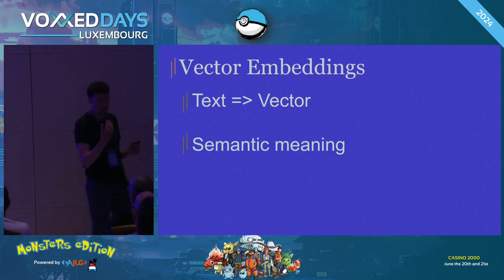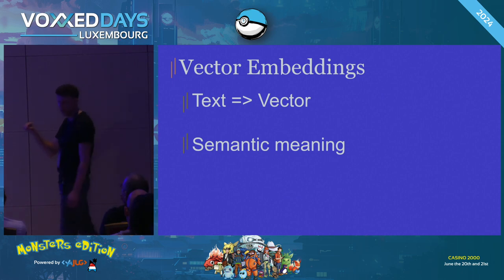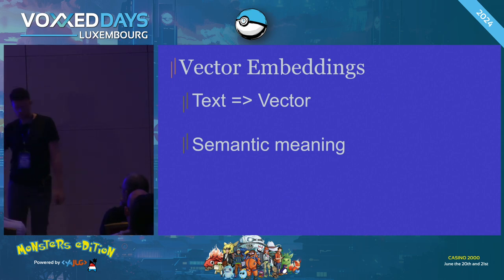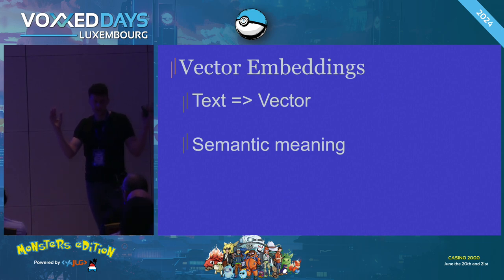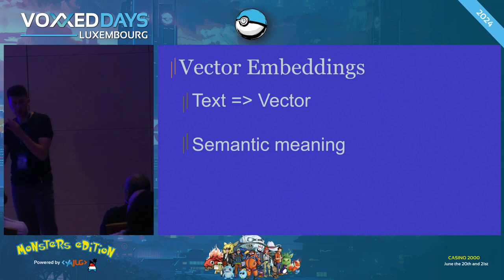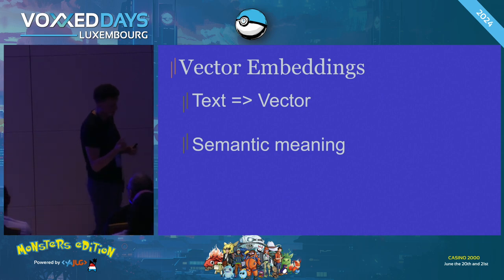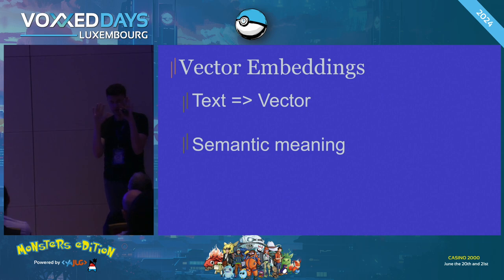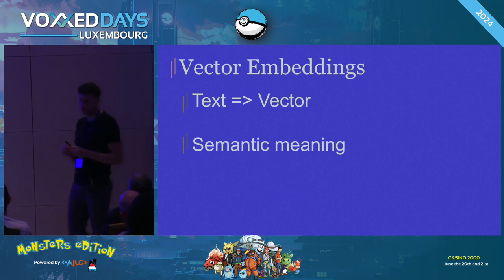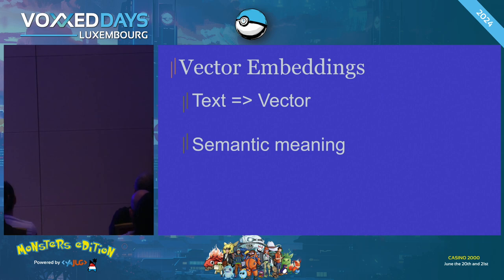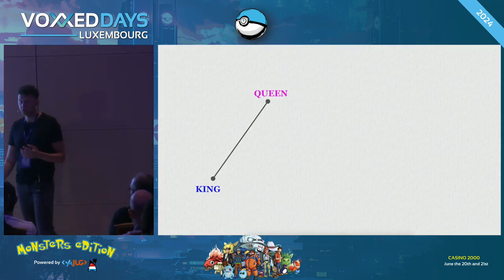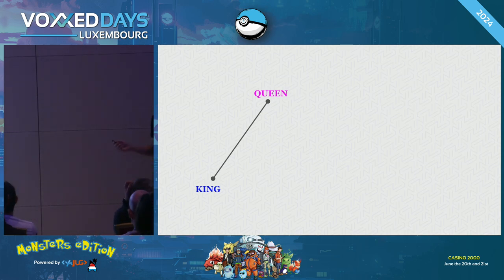The general idea is that you pull whatever data you need — from PDFs, from a database, from an API — format it, and pass it as part of the prompt to the large language model. This is called RAG: Retrieval Augmented Generation. A very common concept related to RAG and LLMs in general is called vector embedding. When you are in the LLM bubble on LinkedIn, very likely you will see content about vectors.